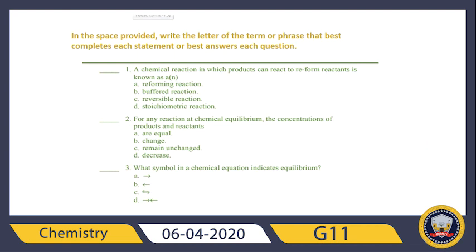Question number two: for any reaction at chemical equilibrium, the concentrations of products and reactants are — equal, remain unchanged, or decrease? As we discussed at the beginning of this video, the correct answer is C, remain unchanged. It is a remarkable property for all reactions at chemical equilibrium that the concentrations of products and reactants remain unchanging — they will not decrease, increase, or necessarily be equal.